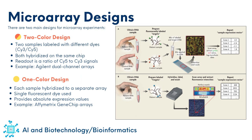In a one-color design, each sample is hybridized to a separate array, and the fluorescent intensity provides an absolute expression value for each sample. In a two-color design, two samples are labeled with different dyes — typically cyanine 3 for a control and cyanine 5 for the test sample — and they hybridize together on the same chip. The readout is the ratio of cyanine 5 and cyanine 3 signals, which represents the expression in the test sample relative to the control. Both approaches are widely used, and while the designs differ, the downstream analysis pipeline is quite similar for both.